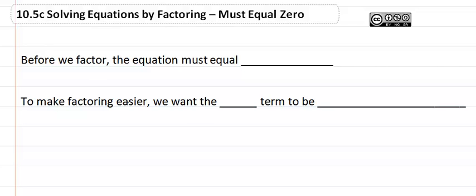10.5c, solving equations by factoring - they must equal zero. Before we factor, the equation must equal zero. If it's not, then we need to move things around until it does.